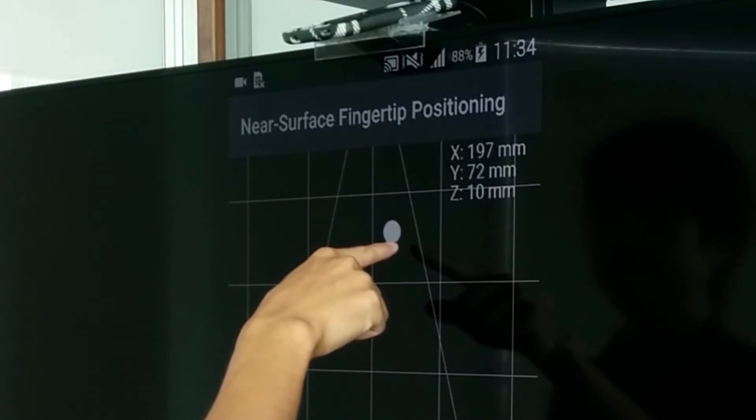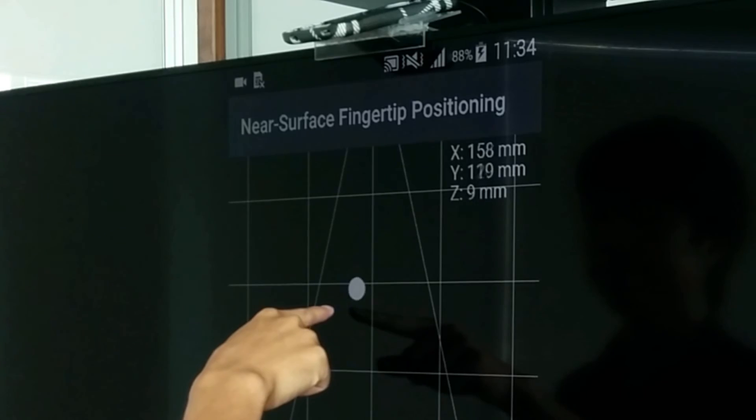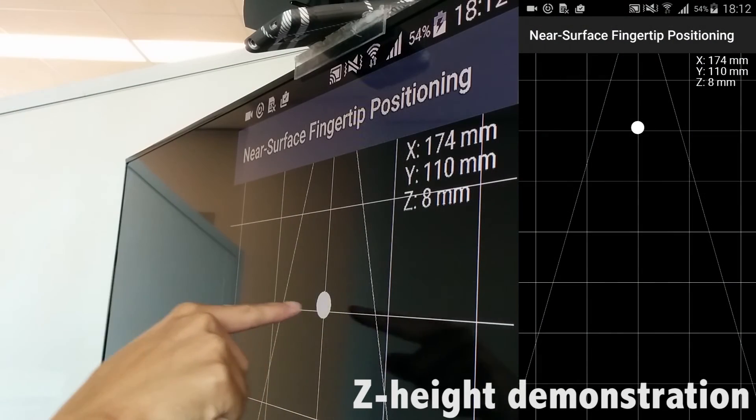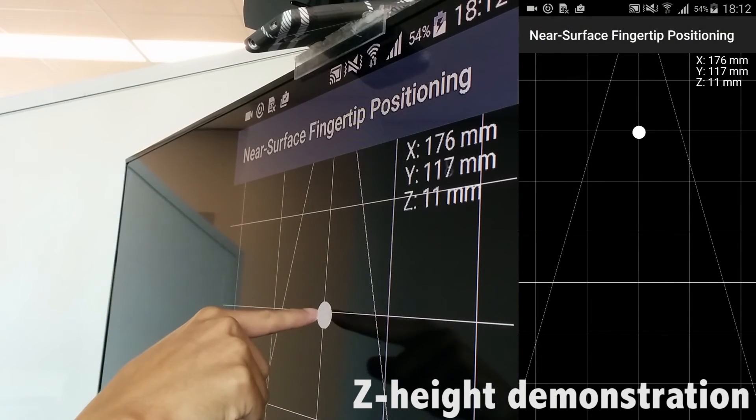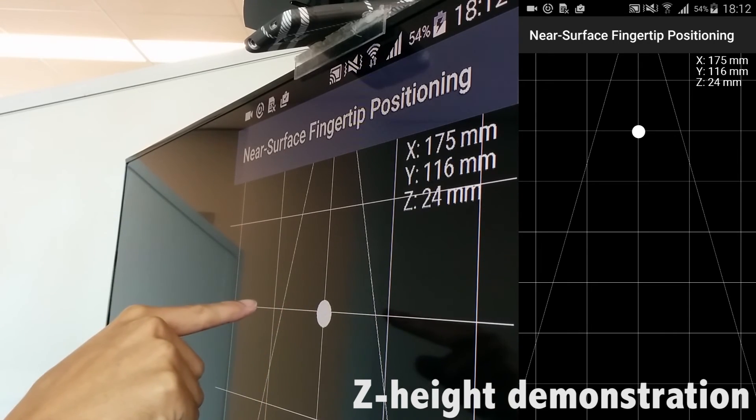SymmetraSense detects the fingertips horizontal and vertical position with respect to the surface. In addition, SymmetraSense can also locate a finger's height above the surface, typically supporting interactions up to several centimeters away.